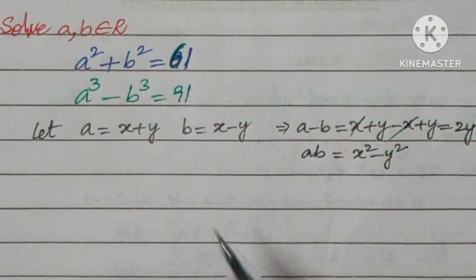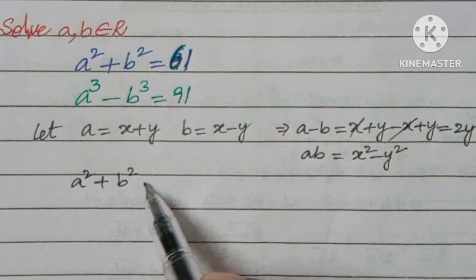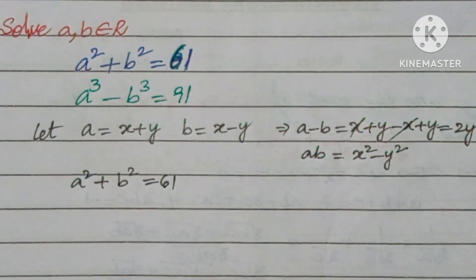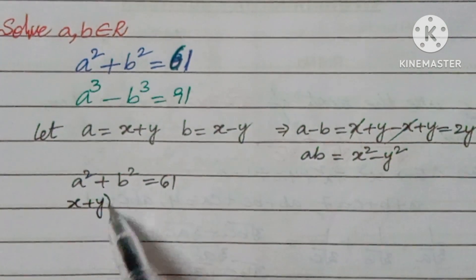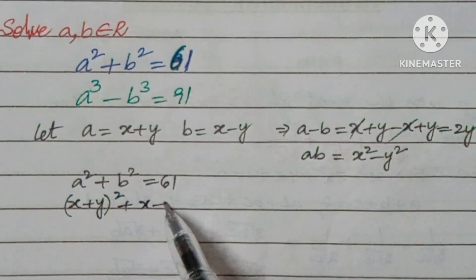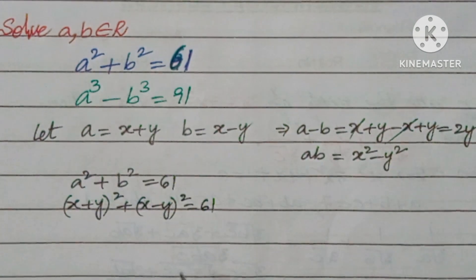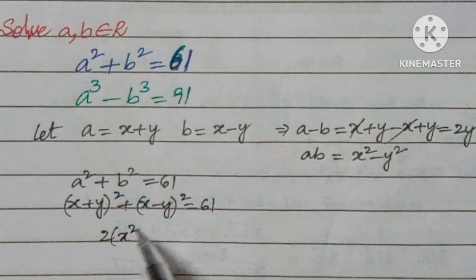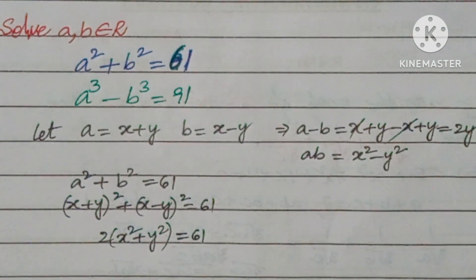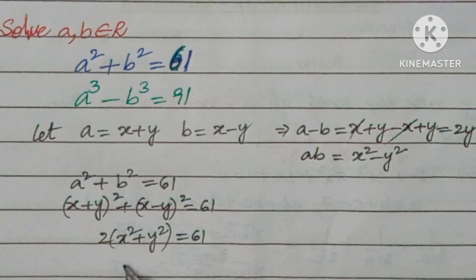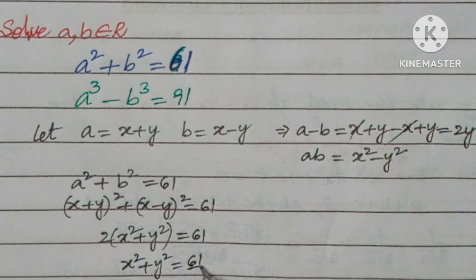Now substituting into the first equation a² + b² = 61: we get (x + y)² + (x - y)² = 61, which simplifies to 2(x² + y²) = 61. Therefore x² + y² = 61/2.